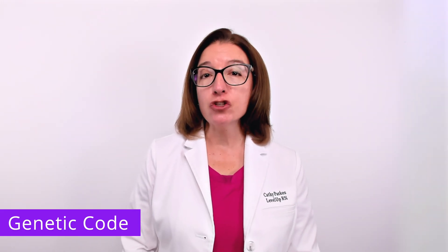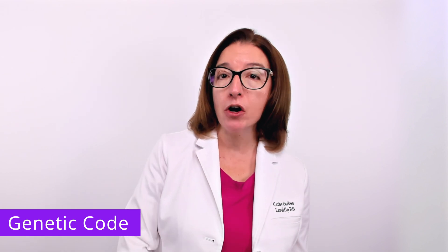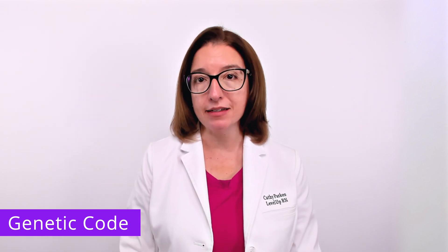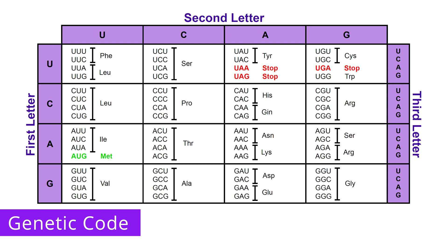Let's first talk about the genetic code, which is a set of instructions that directs translation of an mRNA into amino acids. As part of the genetic code, we have codons, which are groups of three nucleotides that correspond to an amino acid. For example, UGG is a codon that corresponds to the amino acid tryptophan, and UUA is a codon that corresponds to the amino acid leucine.